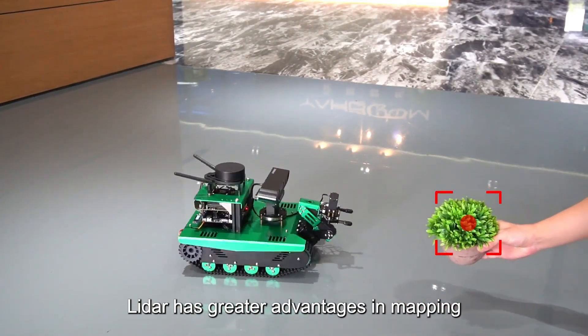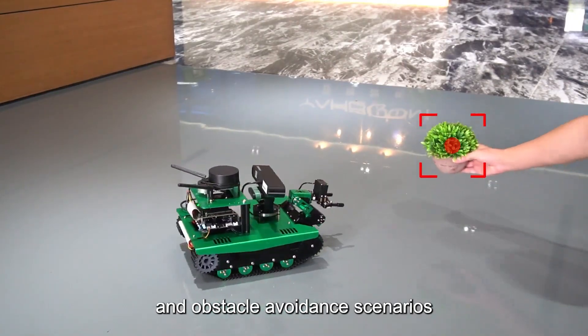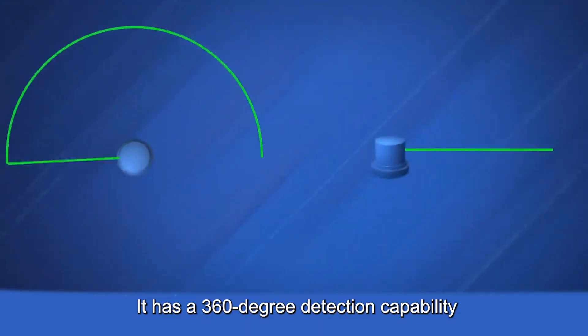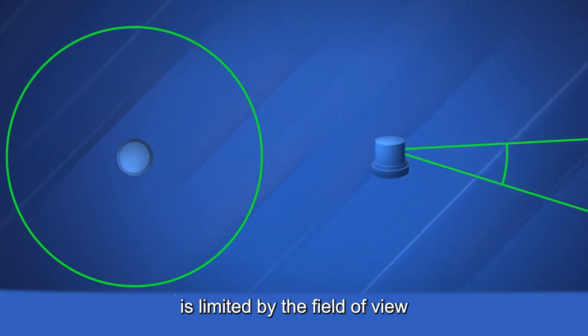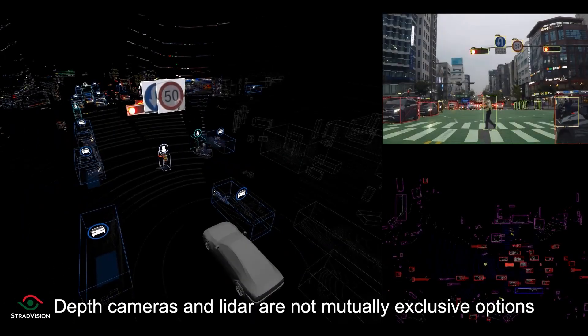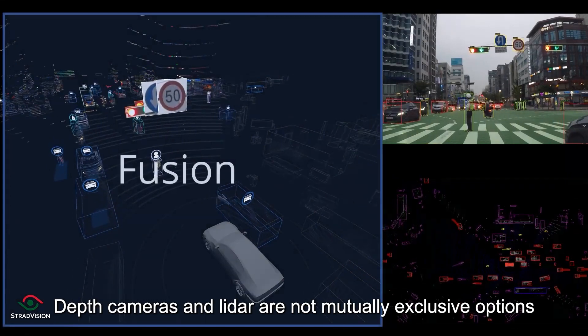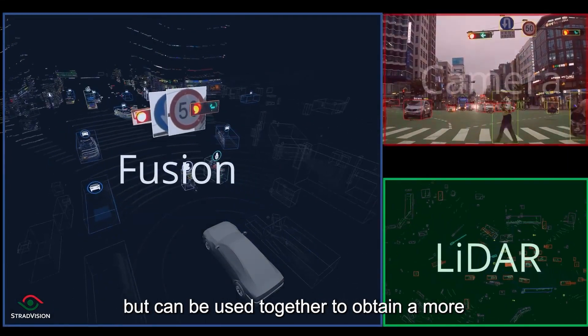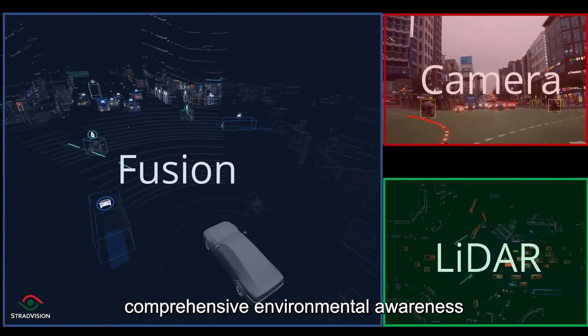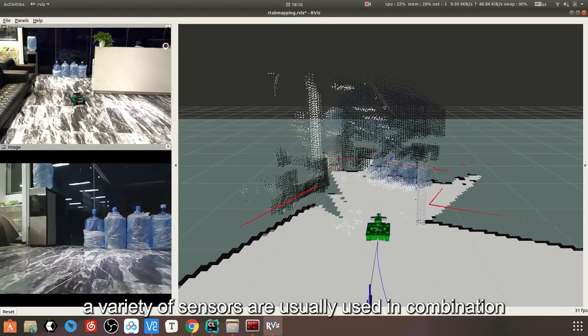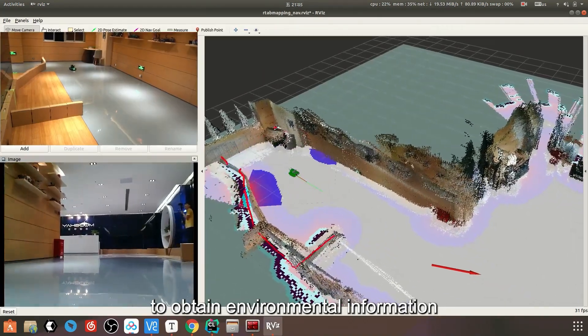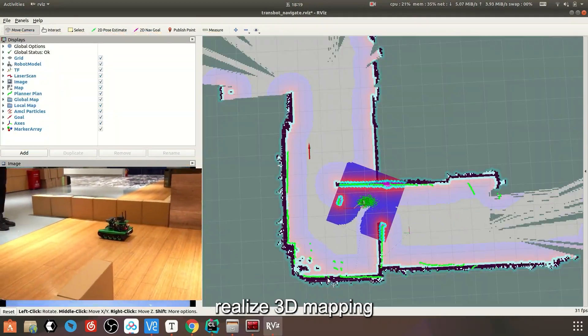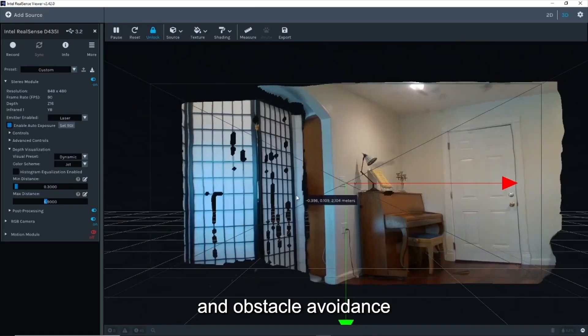LiDAR has greater advantages in mapping and obstacle avoidance scenarios. It has 360-degree detection capability, but the detection range of a depth camera is limited by the field of view. Depth cameras and LiDAR are not mutually exclusive options, but can be used together to obtain more comprehensive environmental awareness. For SLAM robots, a variety of sensors are usually used in combination to obtain environmental information, realize 3D mapping, navigation, and obstacle avoidance.